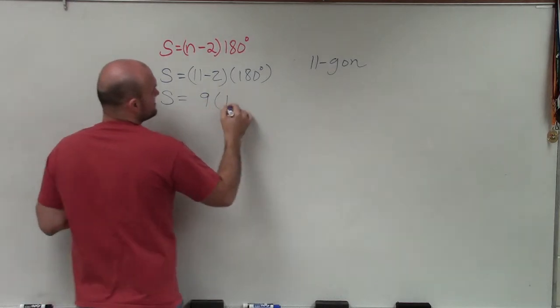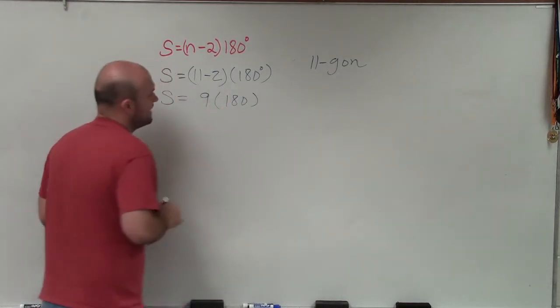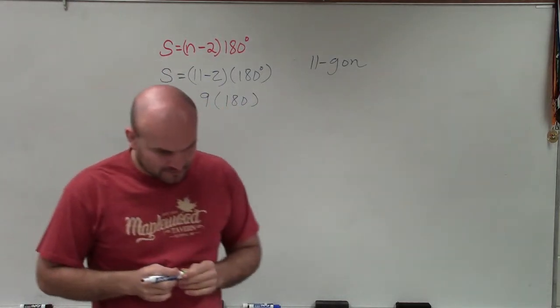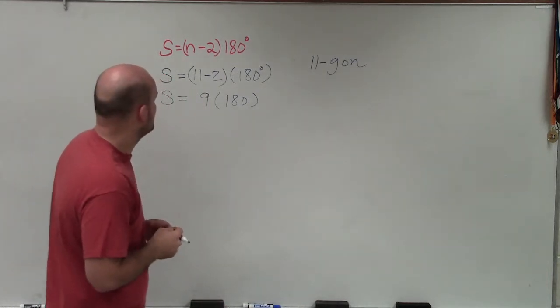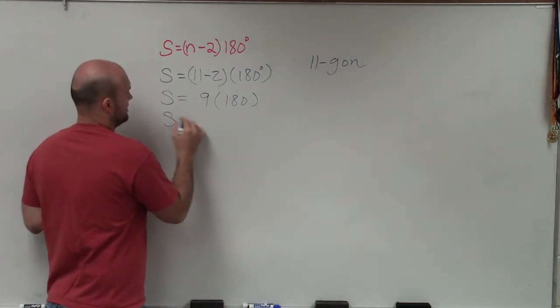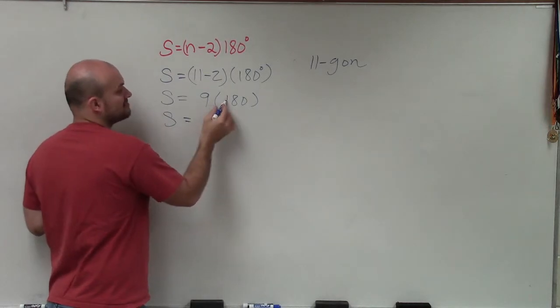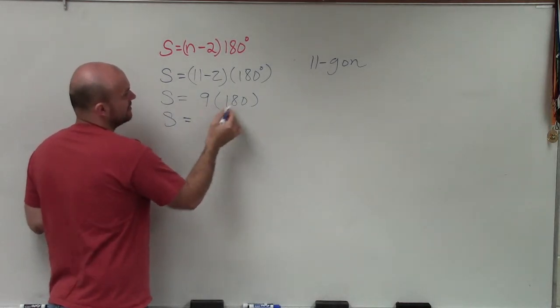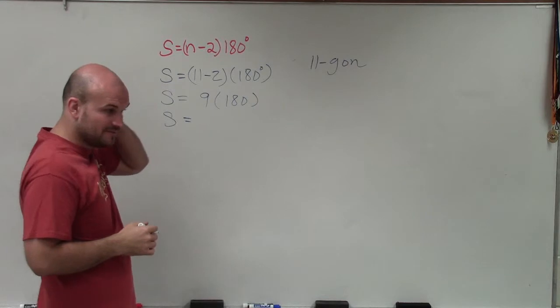And I was going to 72, so that'd be 1,620. S equals... So 9 times 1 is 900, and then 9 times 80 would be 720.